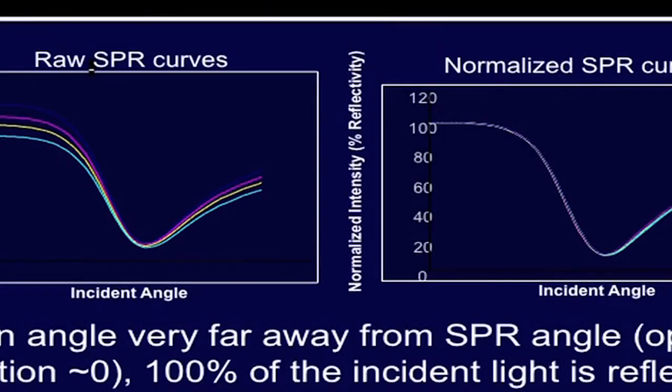The next important step is how to normalize intensity or percentage reflectivity. The left-hand side image shows a raw SPRI curve, whereas the right-hand side image shows a normalized SPRI curve.